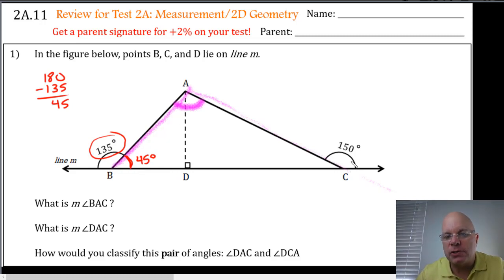This 150 degree angle is also an exterior angle for the triangle because it's adjacent and supplementary to this interior angle, ACD. So I know that this 150 plus ACD must equal 180, so this must be a 30 degree angle right here.